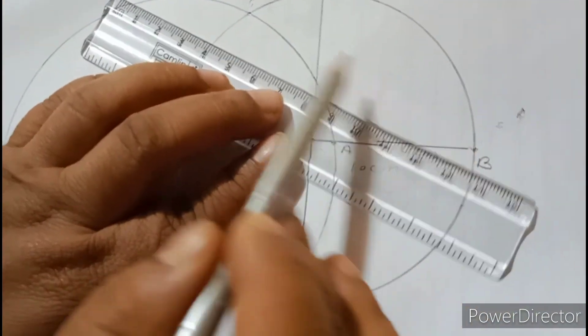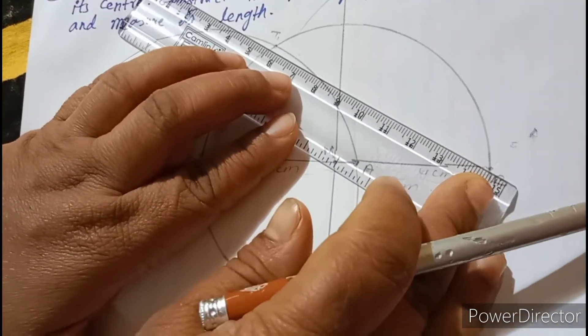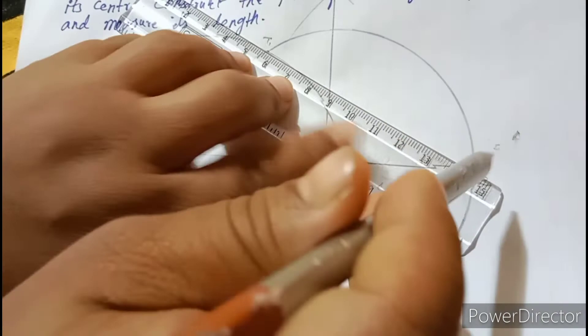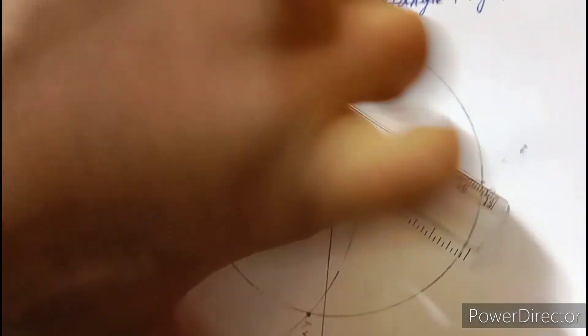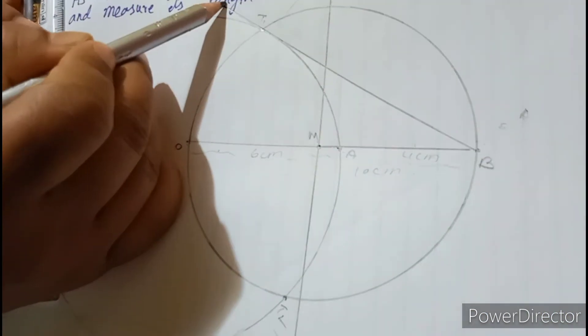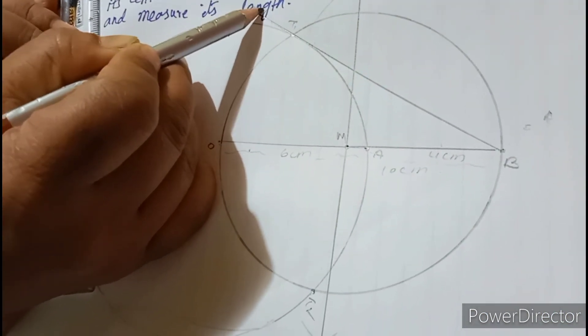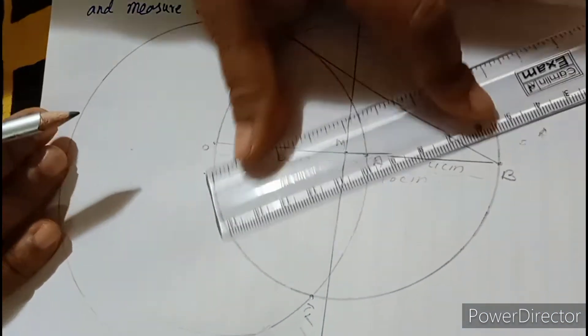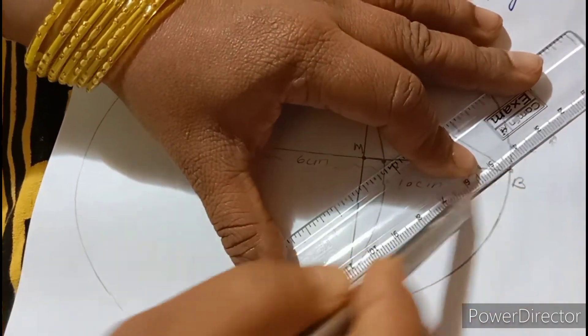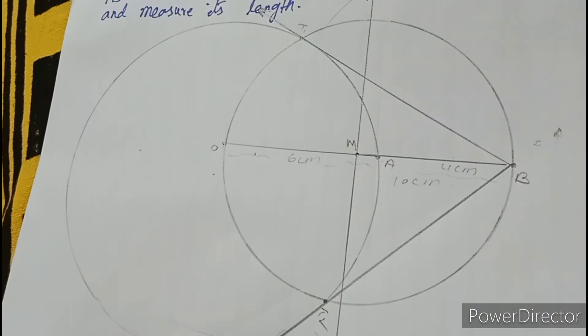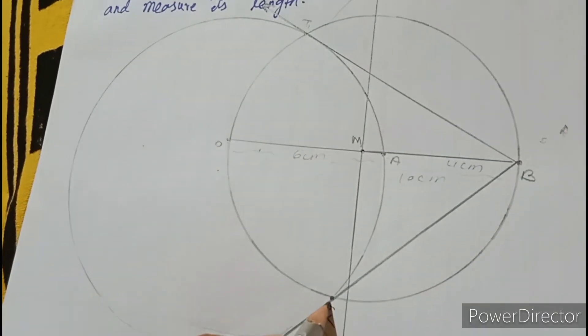Now, you have to join from B to T1. See here? I am joining from B to T1. A little extension I am doing. See? Here it is. From B to T1. Next, from B to T2. You have to extend like this. A little extension I am doing. So, this is your tangents.